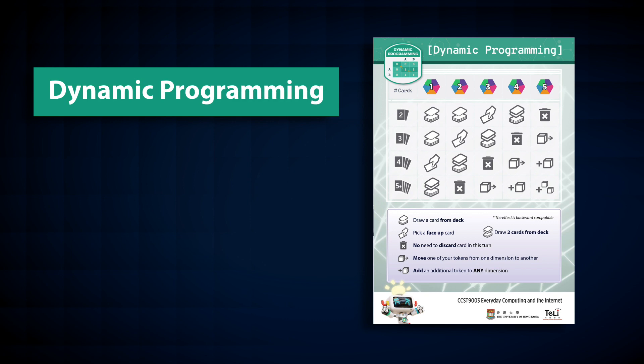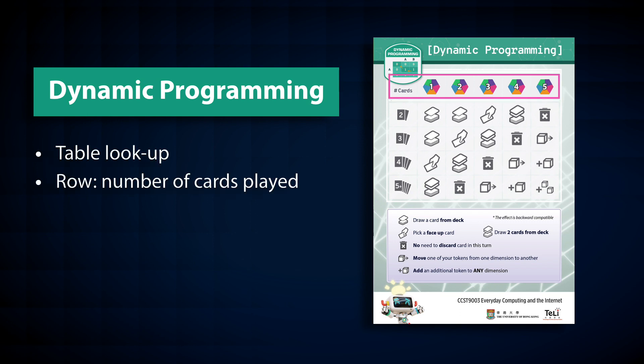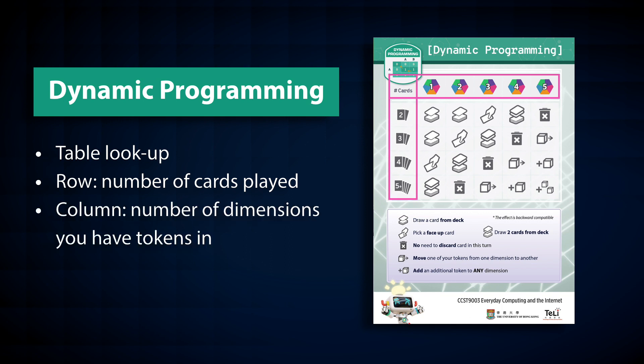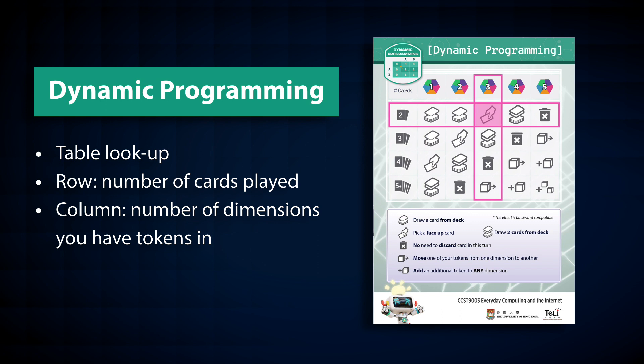Dynamic programming. This is the dynamic programming, or DP, board. If you play DP cards, you can earn benefits by looking up this table. The row represents the number of cards you just played, and the column represents the number of dimensions in which you have tokens. For example, if I just played two DP cards and I have tokens in three dimensions, I can pick a face-up card. Remember, the effect in this table is backward compatible, so in this example, instead of picking a face-up card, I can also choose to draw a card from the draw deck.